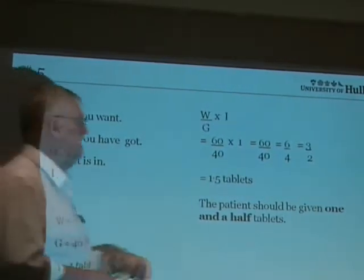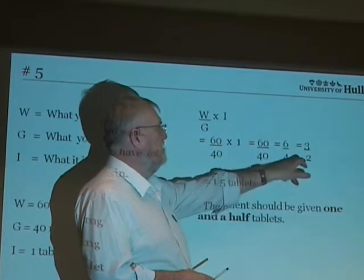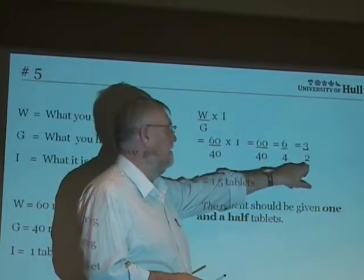This is 60 over 40 times 1. 60 over 40 cancels down to 6 over 4, which then cancels down to 3 over 2.